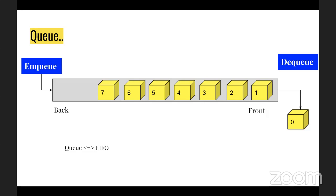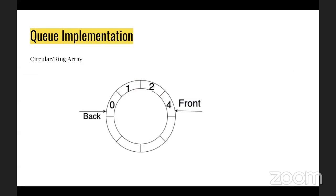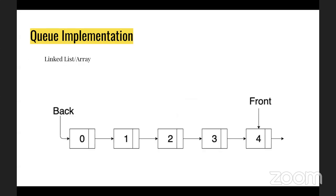The first-in, first-out principle means message 0 entered first so it is removed first. If you implement this in any language you can use a circular linked list or circular array with a fixed number of elements, or a single or double linked list where you keep appending at the end and removing from the front.